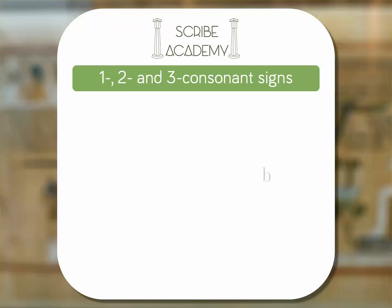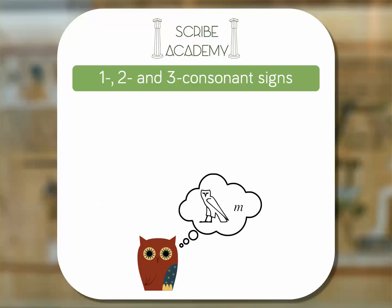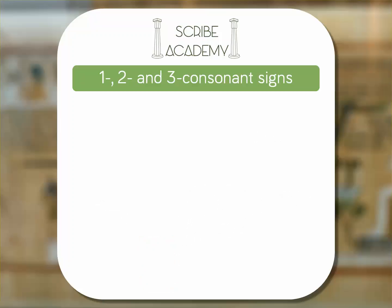In the English language, each letter of the alphabet represents one sound. The Egyptian language is not always so. Some hieroglyphs — many of the most frequently used signs — do represent a single consonant, like in English. For example, the owl sign is the letter M. It's called a one-consonant sign. However, some signs represent two consonants or three consonants.